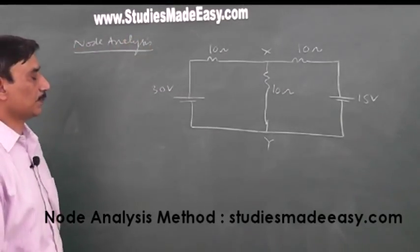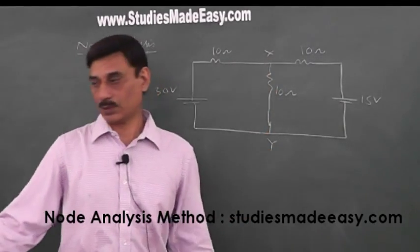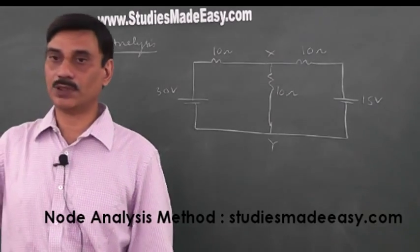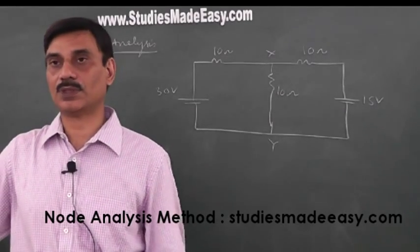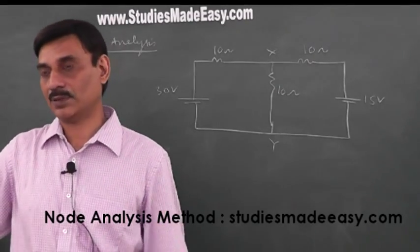Now in node analysis method, what we do is we see the nodes, how many nodes are there. A node or junction is where there are three or minimum three wires, or three and more than three wires they are joined.